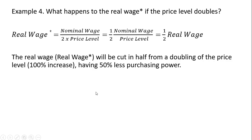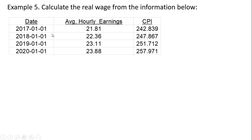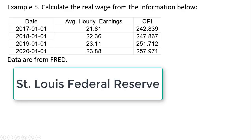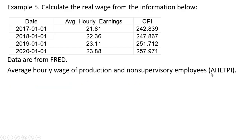In our final example, Example 5, we're going to calculate the real wage from some real-world data. We have dates here from January 2017 through January 2020, we have average hourly earnings and consumer price index. This data are from FRED, so you could find this online—the average hourly wage of production and non-supervisory employees.